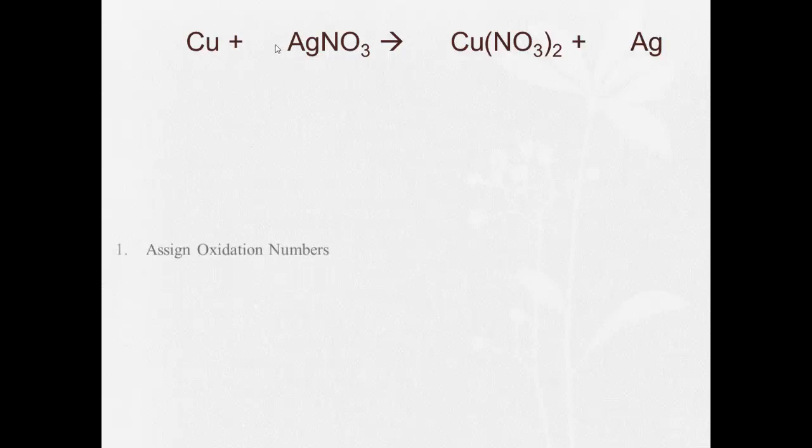So first thing we're going to do with this is assign oxidation numbers. Alright, so we've got to follow the rules. Copper is by itself, so it's got an oxidation number of zero. Now nitrate, when we look at table E, we can see that nitrate NO3 is NO3 minus. So nitrate is going to be minus one, which means silver is going to be plus one. So this whole thing here is minus one and plus one. The reason why I did that here is because the nitrate stays by itself, so I don't really have to deal with what's going on inside here. It'll just make my life a lot easier.